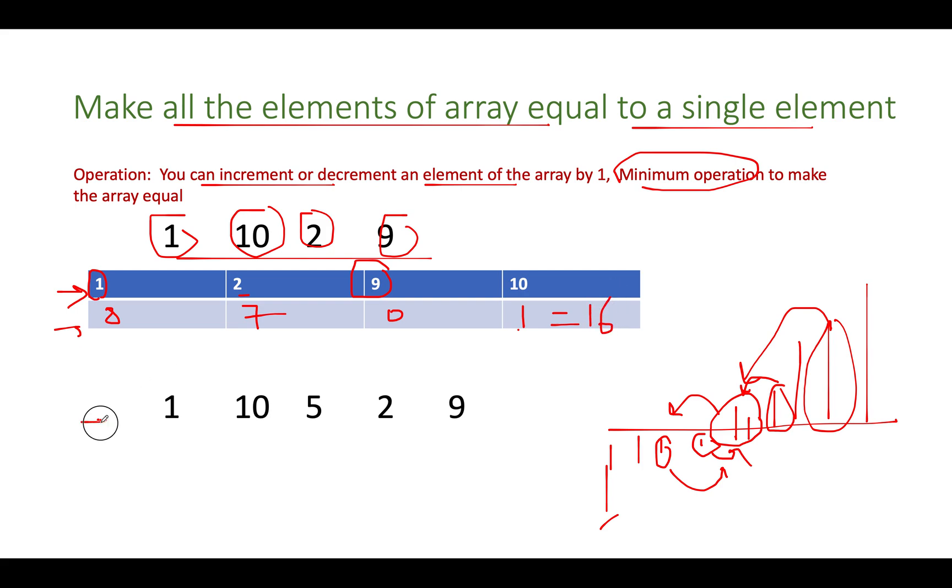So let's try and understand it by another test case. What we will do, we will sort the array because in order to identify the middle element, we need to do the sorting operation. So we have 1, 2, 5, 9 and 10. So which one is the middle element? 5 is the middle element. So we will try to bring all the elements to 5. We need to add 4 here. We need to add 3 here. We don't need to do anything here. We need to subtract 4 here. We need to subtract 5 here.